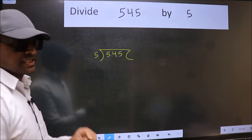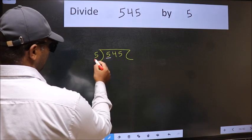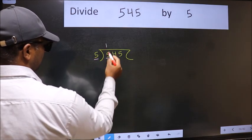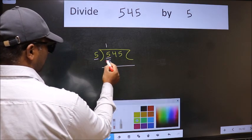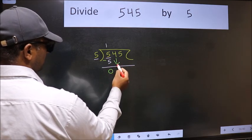This is your step 1. Next, here we have 5 and here also 5. When do we get 5 in 5 table? 5 once 5. Now we should subtract, we get 0. After this, bring down the beside number.